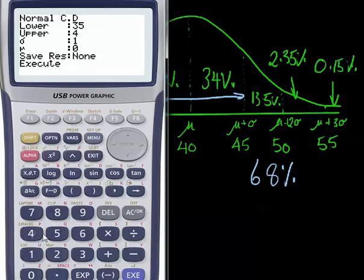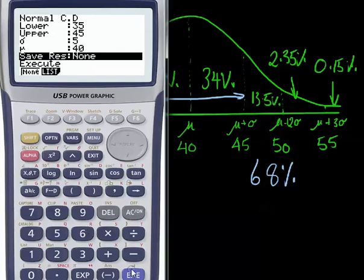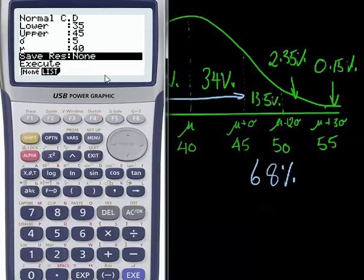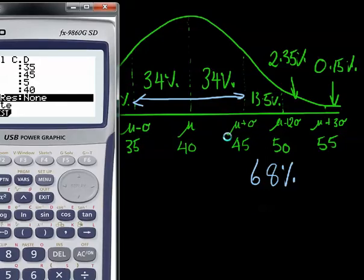Then our upper value of 45 and then we need to put in our standard deviation of 5 and our mean of our population which was 40. And if we hit execute again, we'll end up with a percentage which is in decimal point form of 68.2% which pretty much matches in with what we're looking at. Now the beauty of the graphics calculator, if we just go exit, is that we can work outside of those boundaries of 35 to 45.